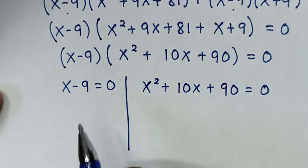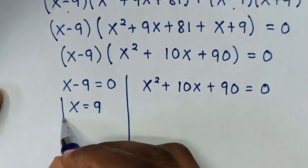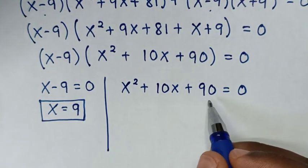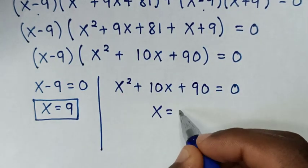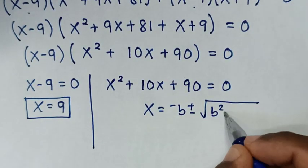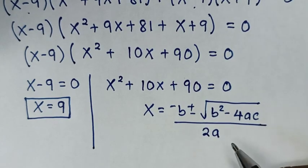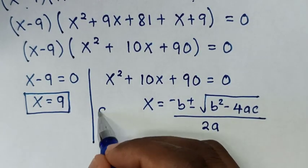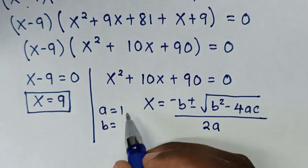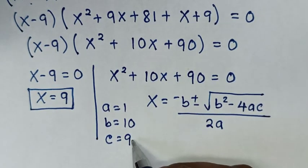To solve the first, we take -9 to the right side, giving x = 9. This is the first value of x. To solve the quadratic equation, we use the quadratic formula: x = (-b ± √(b² - 4ac)) / 2a, where a = 1, b = 10, and c = 90.